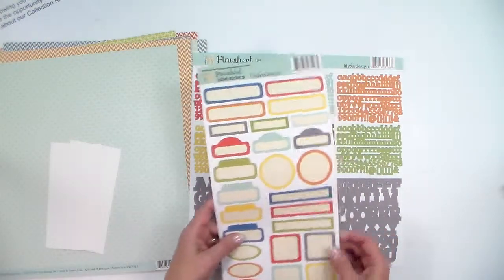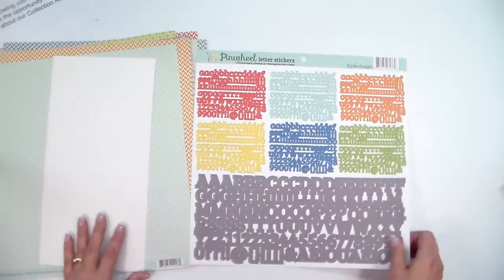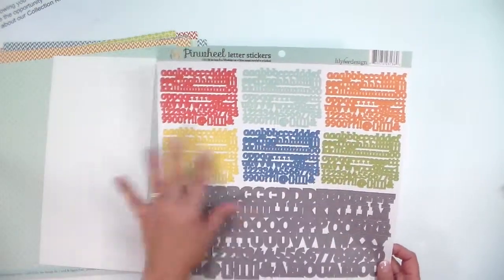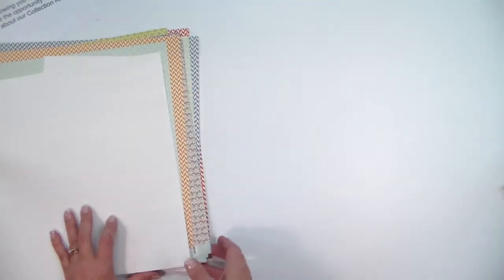Here's some little tabs and little blank stickers that you could use to journal on, and then here is an entire sheet of a lot of little bitty stickers. You have little alphabet stickers and then a larger font right here. That's how the kit comes from Lily B.